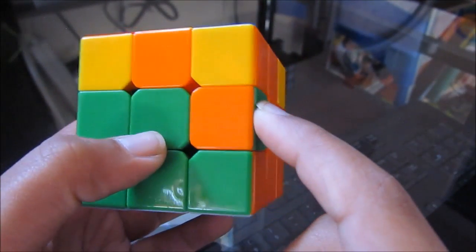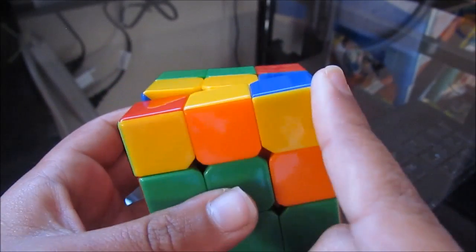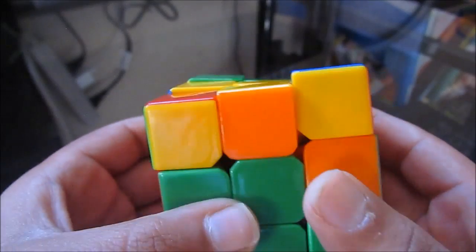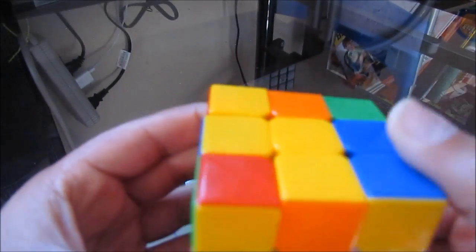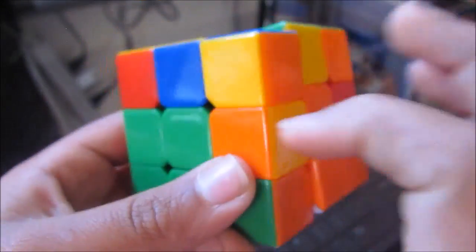So this is on the right side, so you have to use the algorithm where you would insert it in on the right side to take this piece out. So that would be U R U I R I U I F I U F. And it's out.